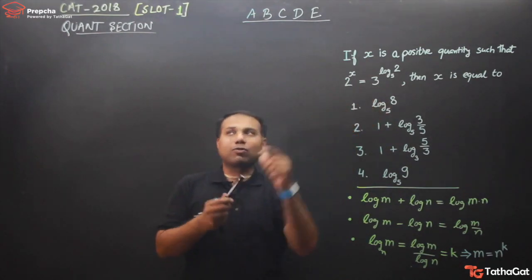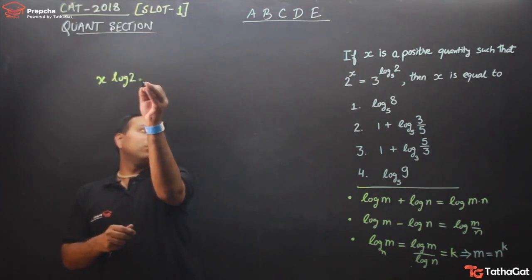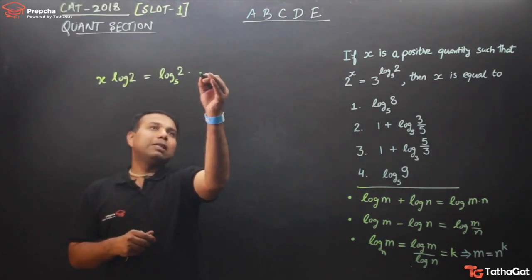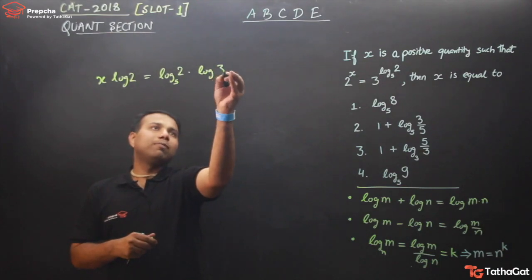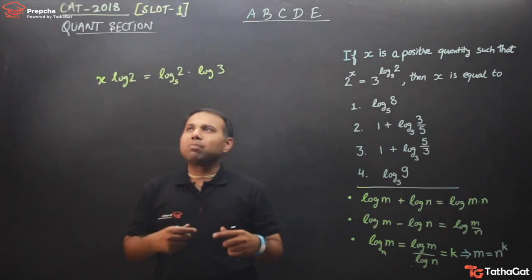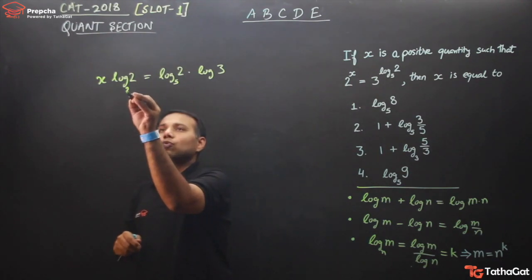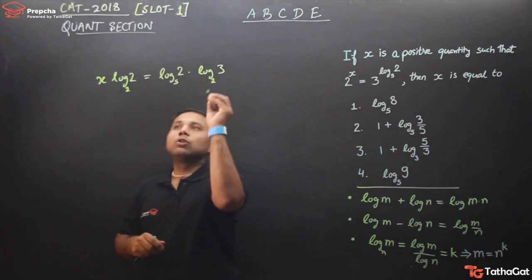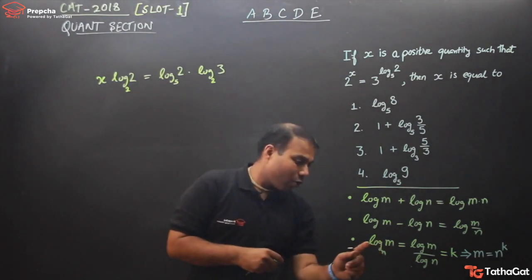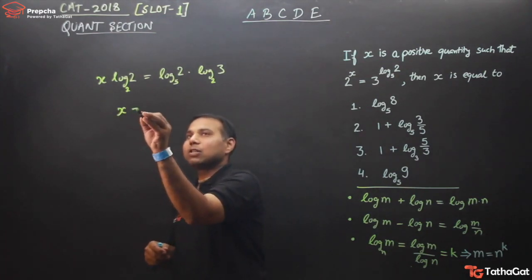If I take log on both sides of this expression, I get x·log 2, which equals log of 2 to the base 5, and this power comes before, times log of 3. Now, I can use any base. To make calculations simpler and find the value of x, I should put base 2. With base 2, log 2 to the base 2 equals 1. So from here, x equals log 2 upon log 5 times log 3 upon log 2.